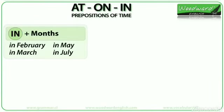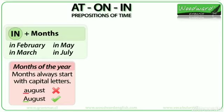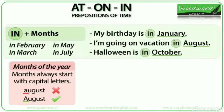The preposition in is used with months. We say in February, in March, in May, in July. Notice how the months of the year always start with a capital letter — August with a capital A. Example sentences: My birthday is in January. I'm going on vacation in August. Halloween is in October. We don't mention a specific day, just the month.